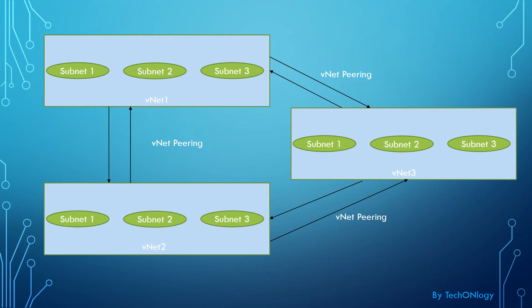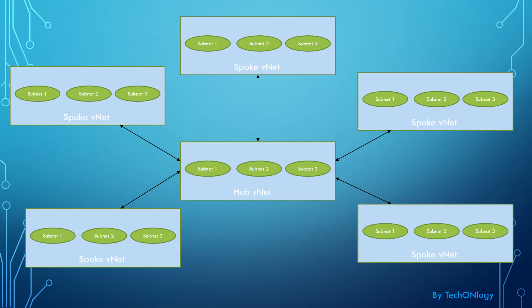This is what the hub-and-spoke model addresses. We place a hub in the middle with different spokes connected to it — similar to a star topology. Any communication between spokes must go via the hub VNet. If Spoke VNet 1 wants to talk to Spoke VNet 2, the traffic goes to the hub and then flows to Spoke VNet 2. We implement this by creating UDRs (User Defined Routes) so that the second hop for spoke-to-spoke traffic is always the hub, and traffic flows accordingly.